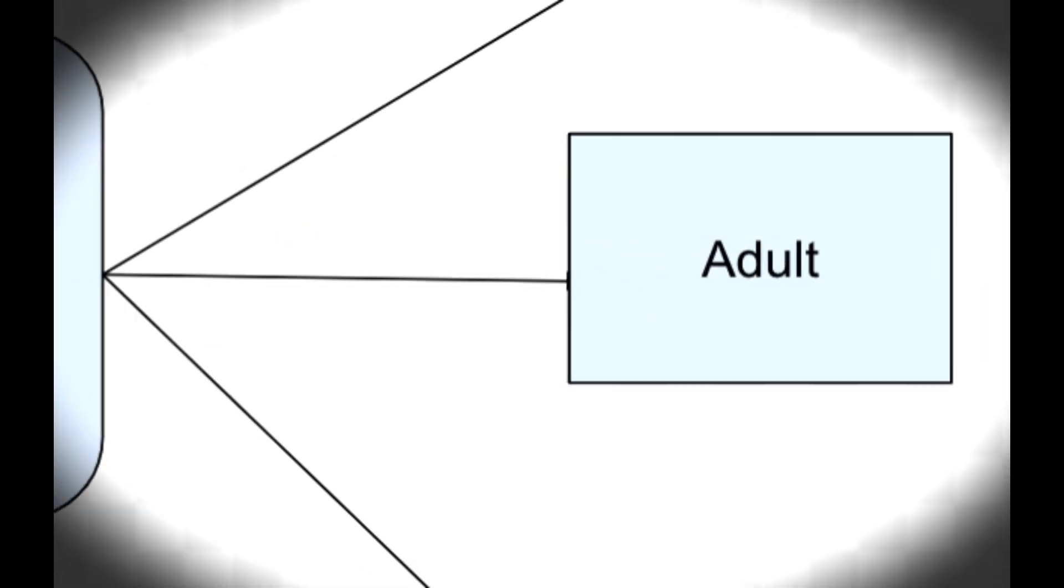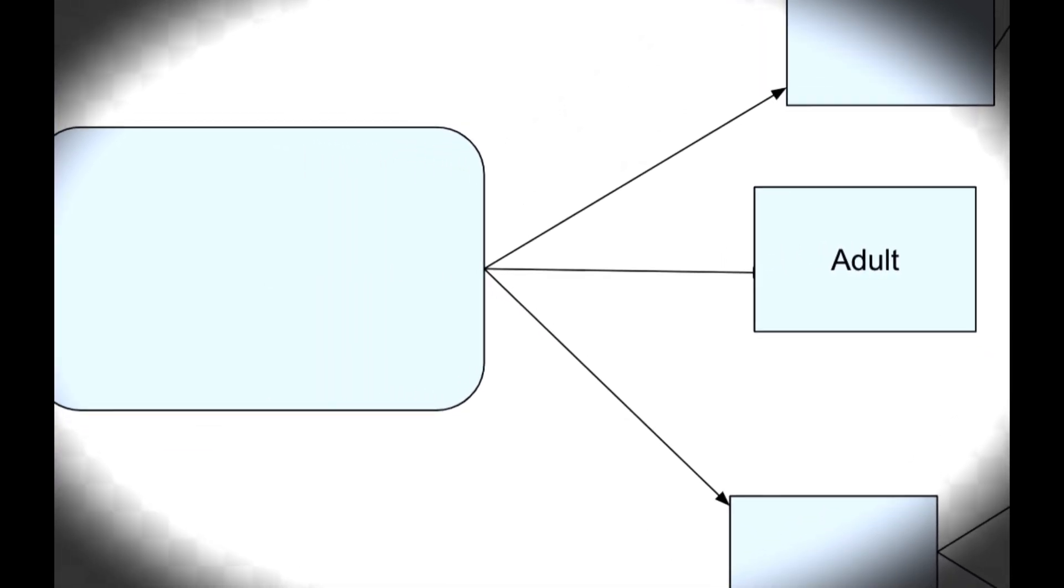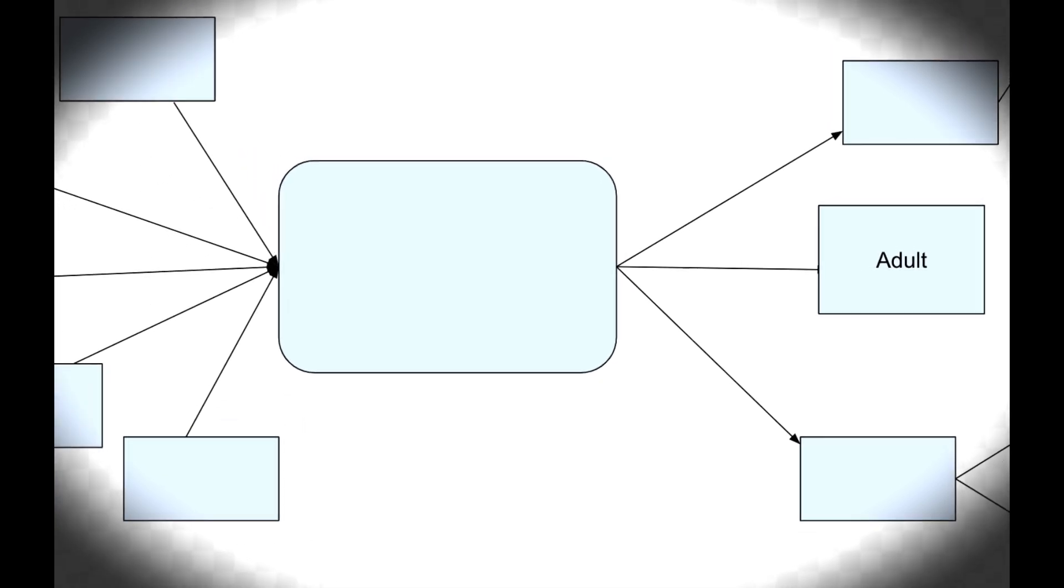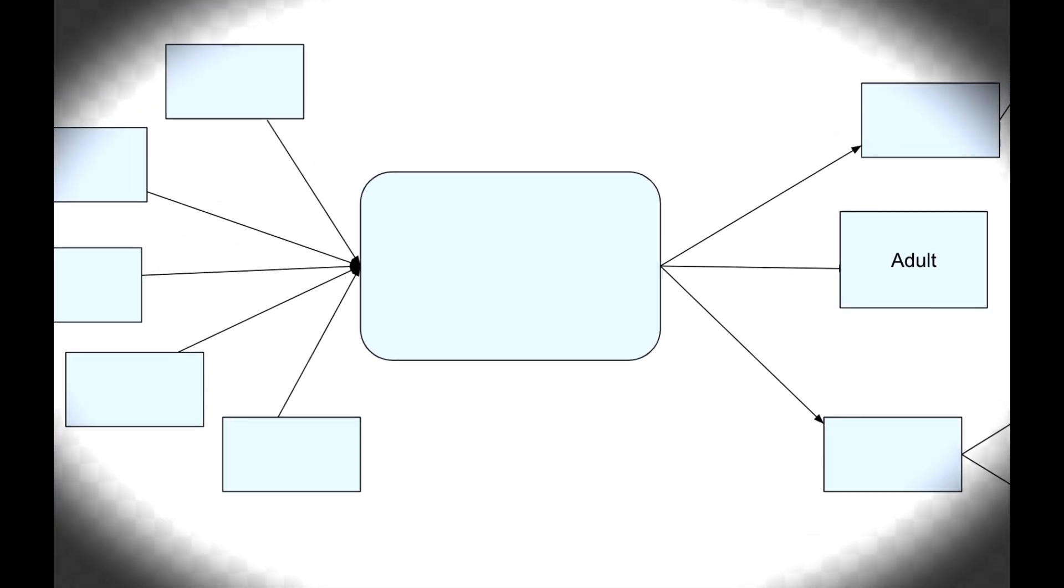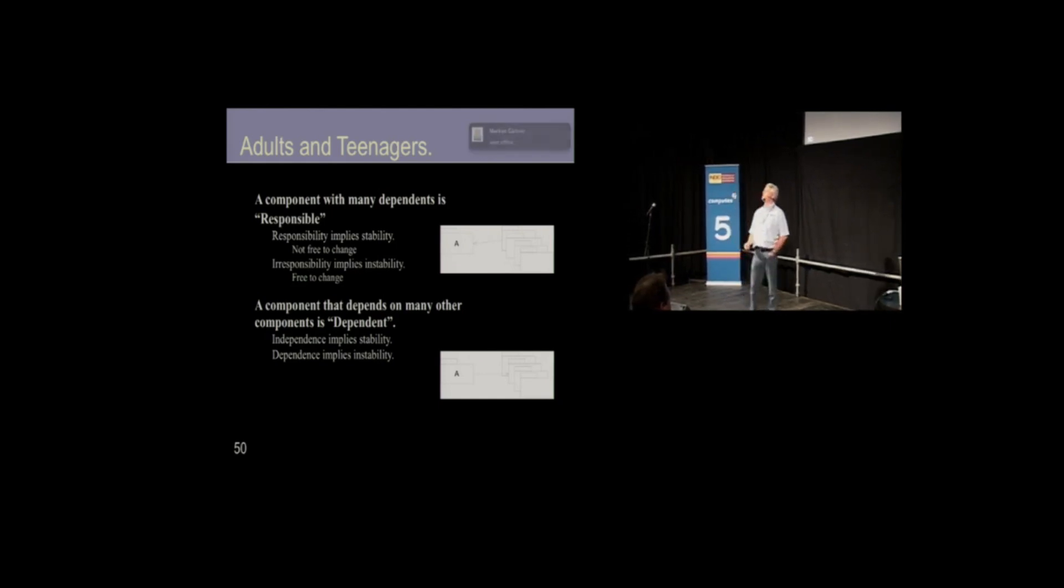This component is responsible to all of these. If it changes, all of those are impacted. We call this kind of component an adult because it is responsible to all of those guys and it has nobody it depends upon. It's responsible and it's independent. It is an adult.